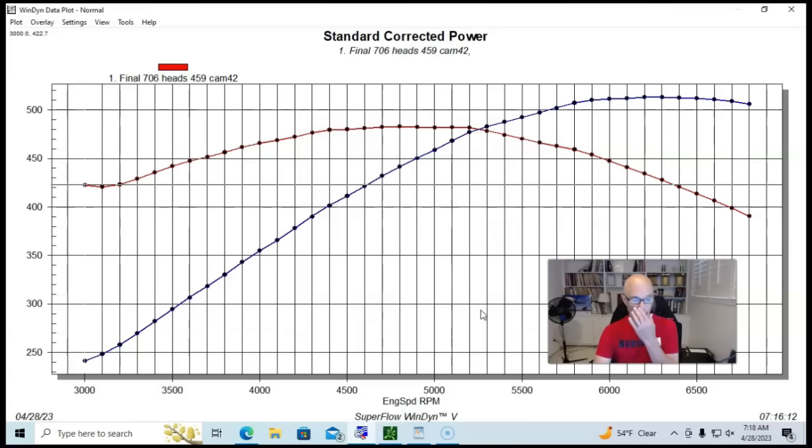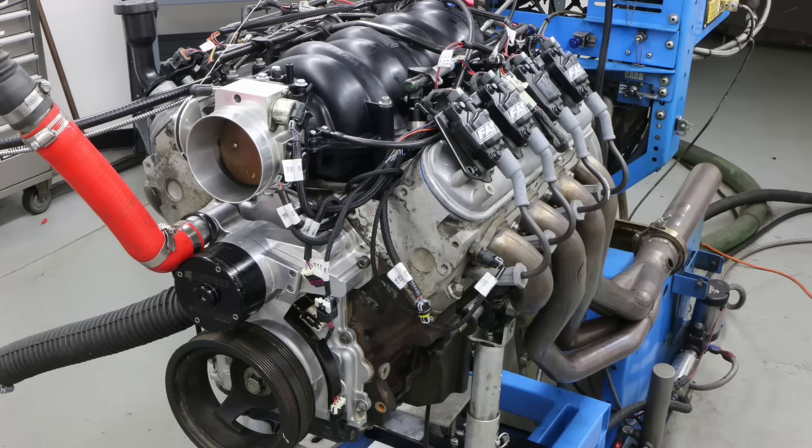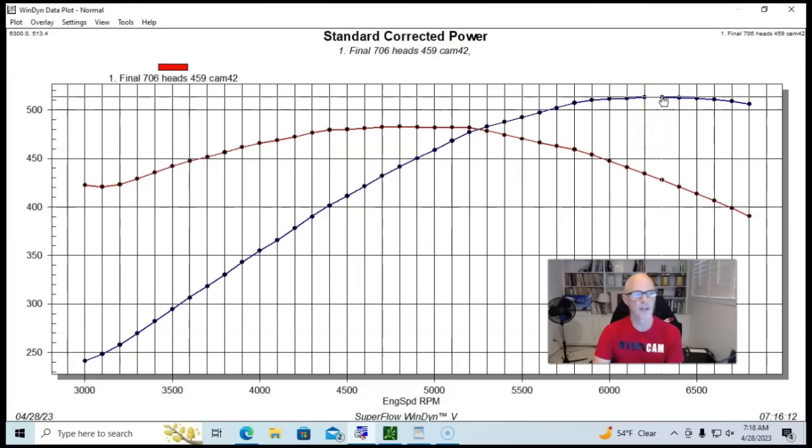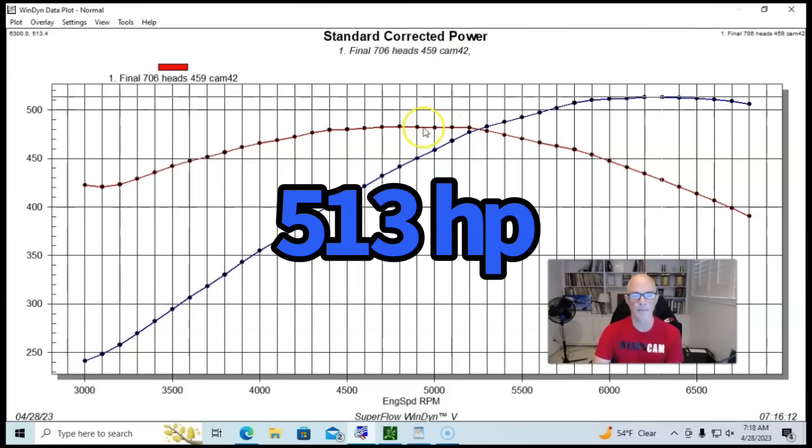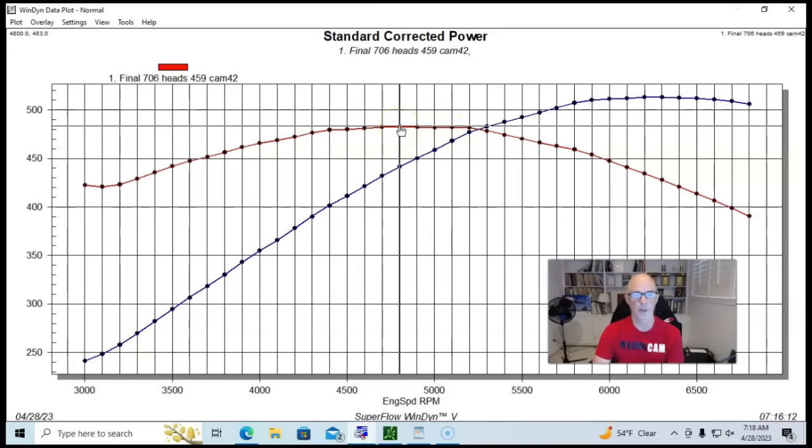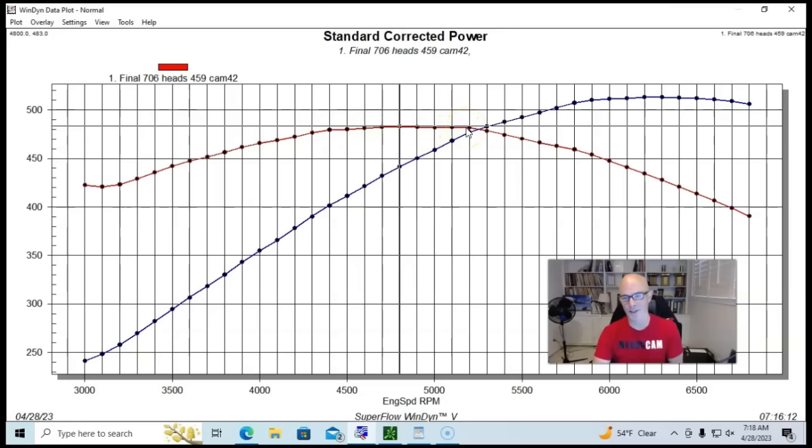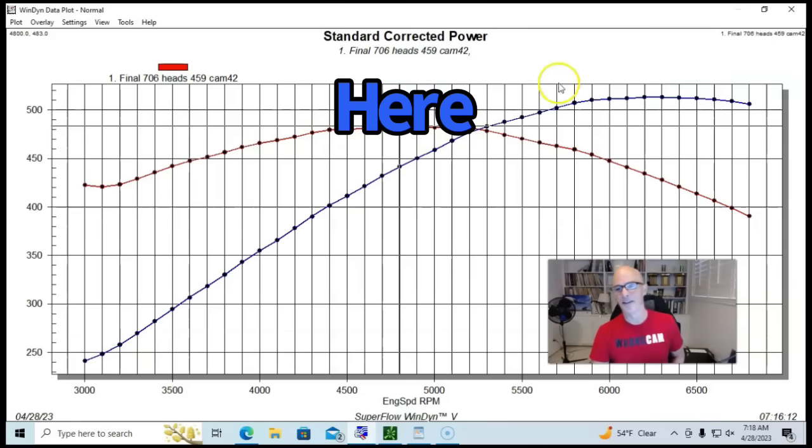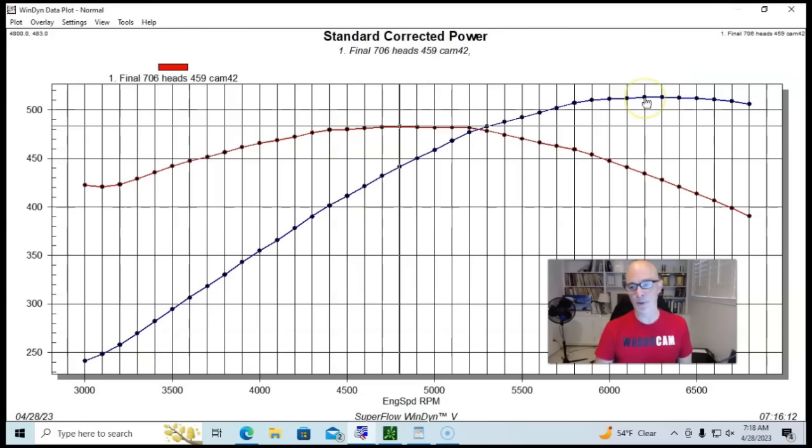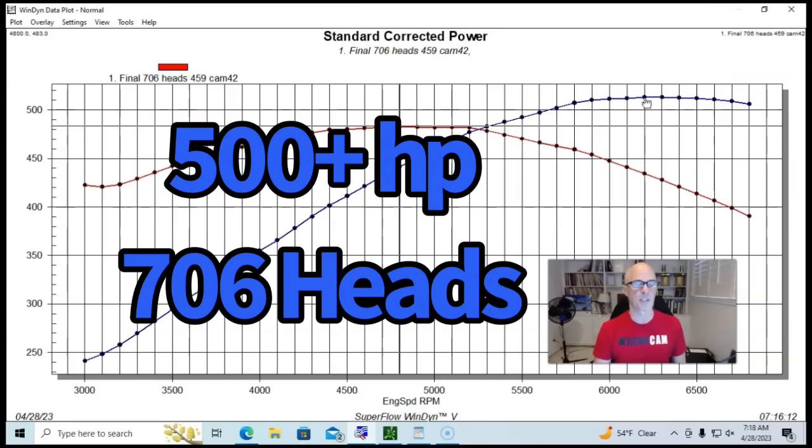And here's what happened run with the stock 706 heads, unported stock valve sizes and all that. 513 horsepower and 483 foot-pounds of torque. So you got a nice flat torque plateau for the LS. And then, you know, on to make pretty good power, which is 513 horsepower is pretty good from a set of 706 heads.